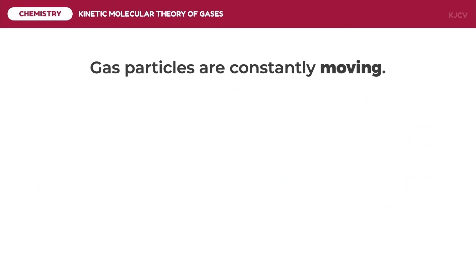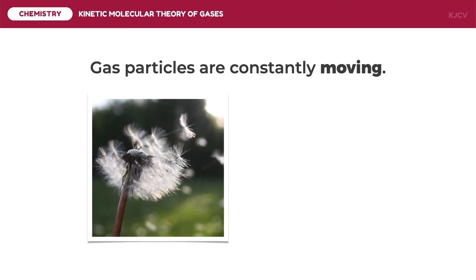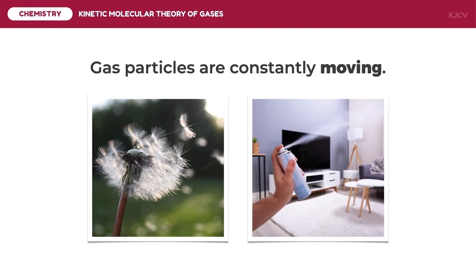The first postulate is that gas particles are constantly moving. Although we cannot really see gas particles, we can prove that they are actually moving from the things that float on or are carried by wind, like dandelions. The scent from air fresheners, whether sprayed or hung on a ventilation system, diffuses to all areas of the room. This means that the gas particles may not be visible, but their motion is evident in the light things which they interact with.